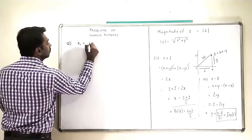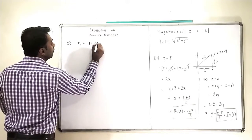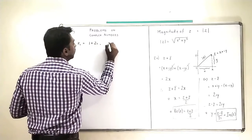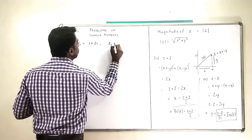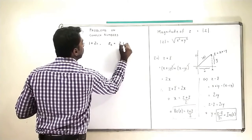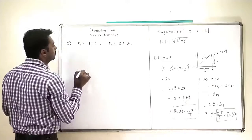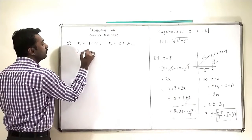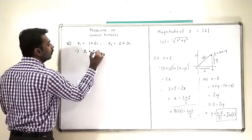We will take two complex numbers: Z1, which is 1 plus 2i, and second, we will take Z2 is equal to 2 plus 3i. We will try to find out some simple calculations here.